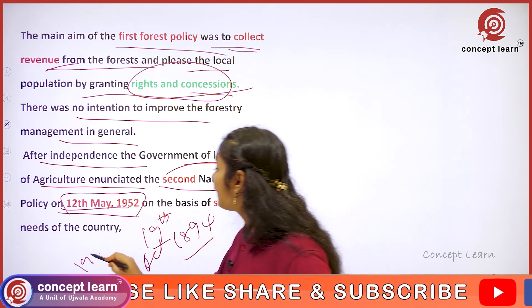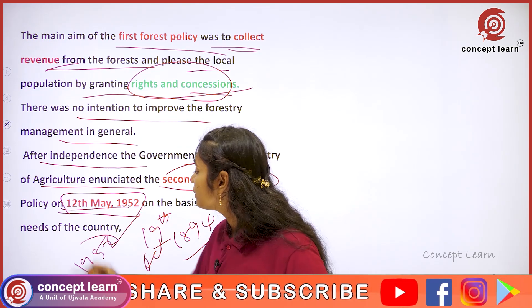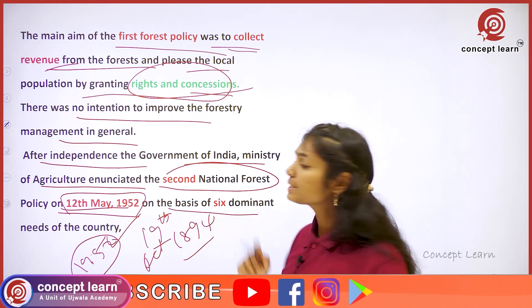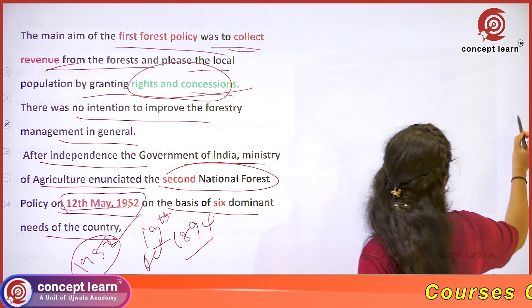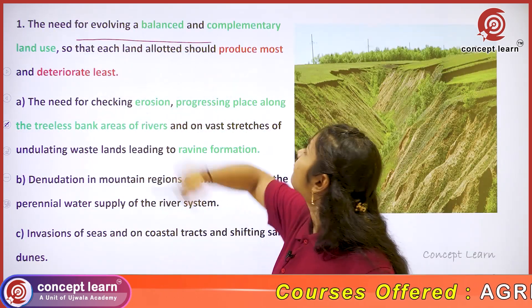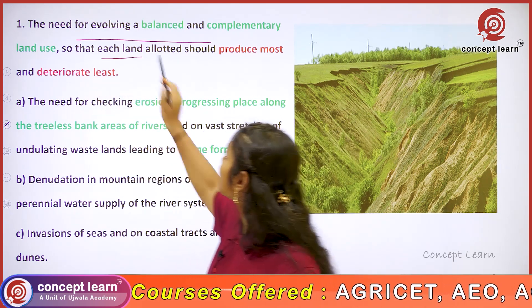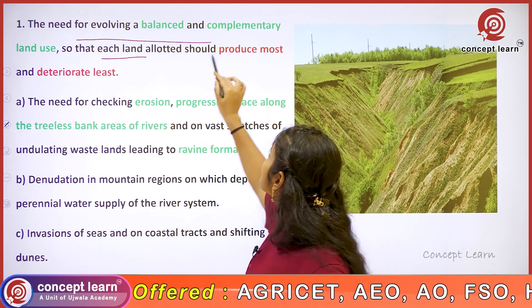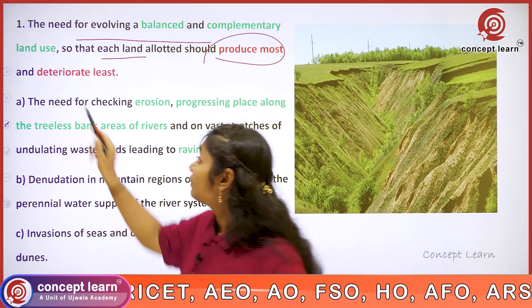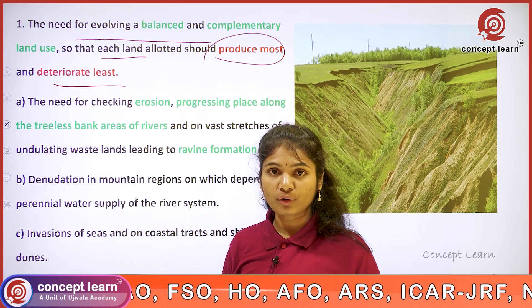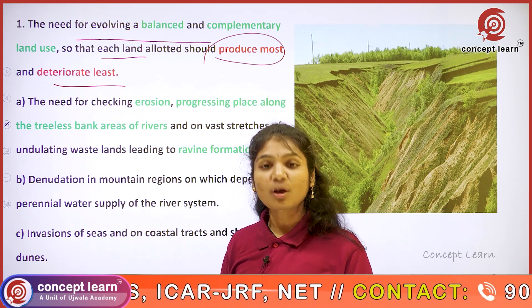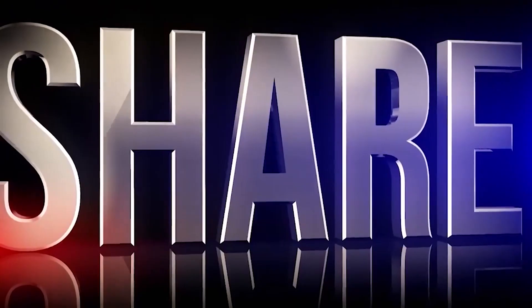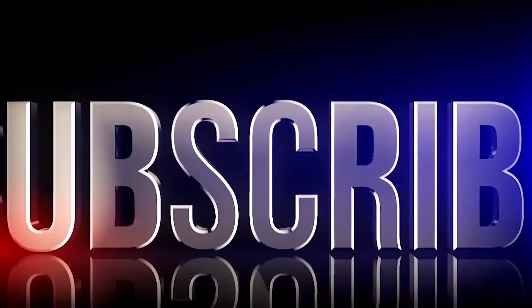The Second National Forest Policy was formulated on the basis of six dominant needs of the country. The first need is for evolving a balanced and complementary land use, so that each land allotted should produce the most and deteriorate the least.